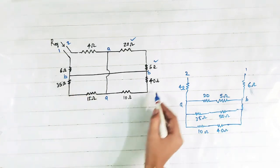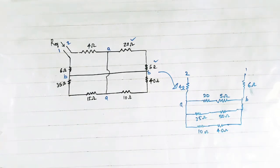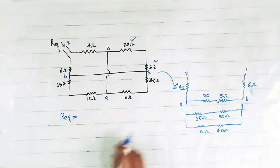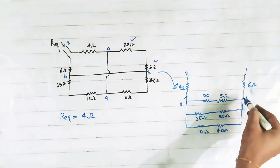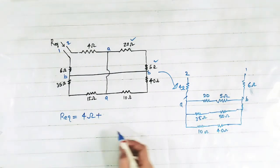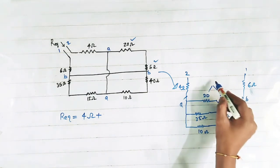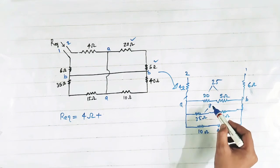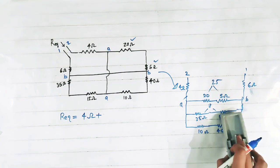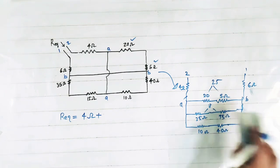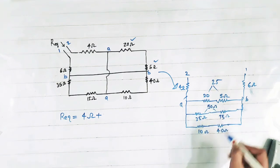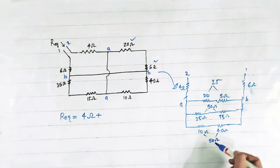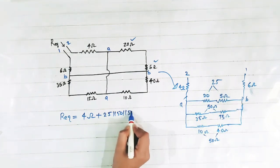Now this complex circuit is reduced to a very simple parallel-series combination. The equivalent resistance equals this 4 ohm in series with a parallel combination. That is: 25 ohm, and these two in series make 85 ohm. So it will be 35 plus 50 ohm, and this will make 10 plus 40, which equals 50 ohm. So we can write it as 25 parallel 50 parallel 50, plus 6 ohm.